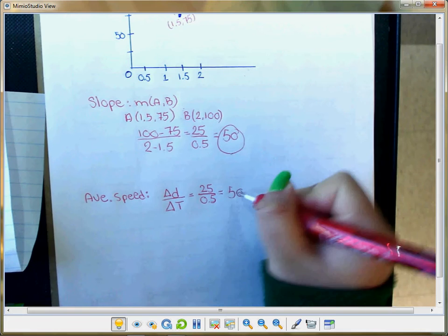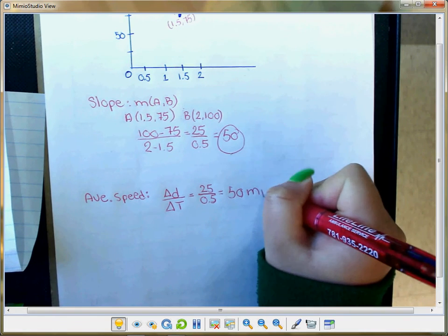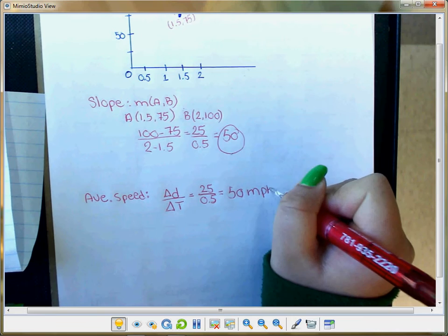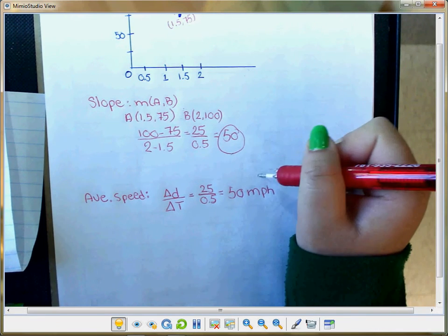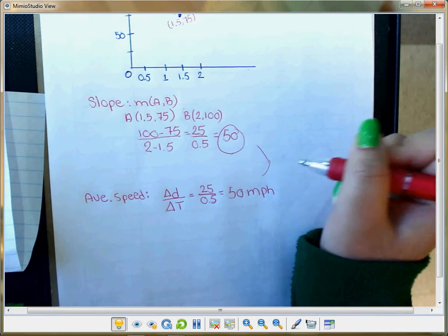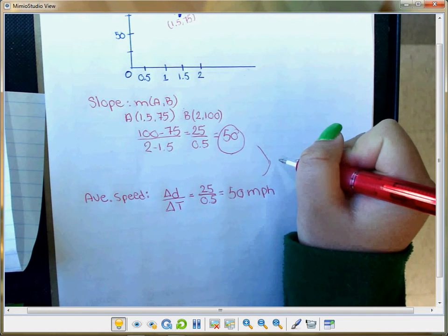So the slope and the average speed will be the same.